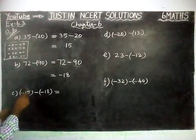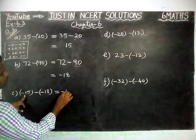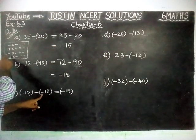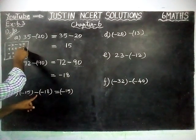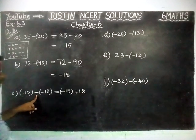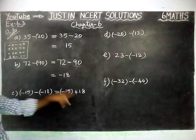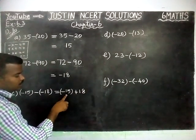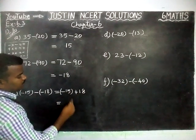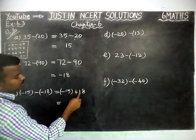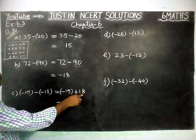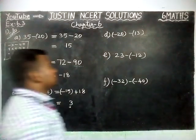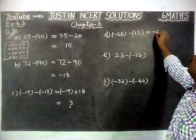Part C equals minus 15 minus minus 18. Minus 15 is written as it is. Next, minus into minus — when minus into minus comes, we convert it to a plus sign. So plus 18; minus into minus equals plus. Now the signs are different: this is a positive number, this is a negative number, so we find the difference. 8 minus 5 equals 3, and 1 minus 1 equals 0. In this, 18 is the greatest number and in front of 18 a plus sign is there, so plus 3 is the correct answer.